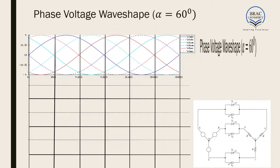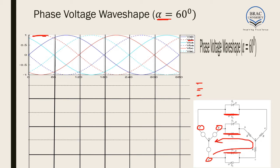Now, if we look at the phase voltage waveshape for alpha equal to 60 degrees, let us consider the first 60-degree interval. For the first 60 degrees, we see that gates 4, 5, and 6 are switched on. It is apparent that current starts from C and either ends at B or ends at A. Looking at the first 60 degrees, the output voltage line-to-line would be either VCB or VCA. We can see that in the first 60 degrees, the VCB voltage is the highest. As a result, current starts from C and comes back to B.